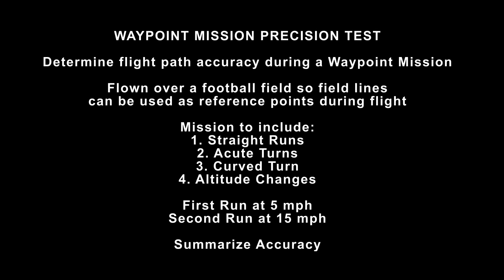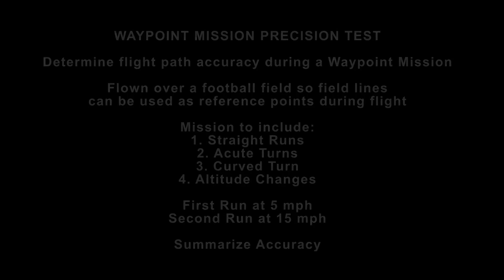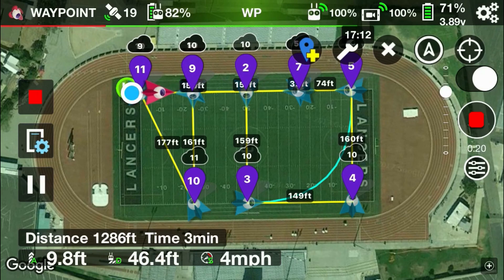Today I'm going to show you the flight path accuracy during a waypoint mission. I'll be flying over a football field so you'll have field lines to use as a reference. The mission is going to include straight runs, acute turns, a curved turn, and altitude changes. I'm going to run it at five miles per hour the first time and then 15 miles per hour for the second run.